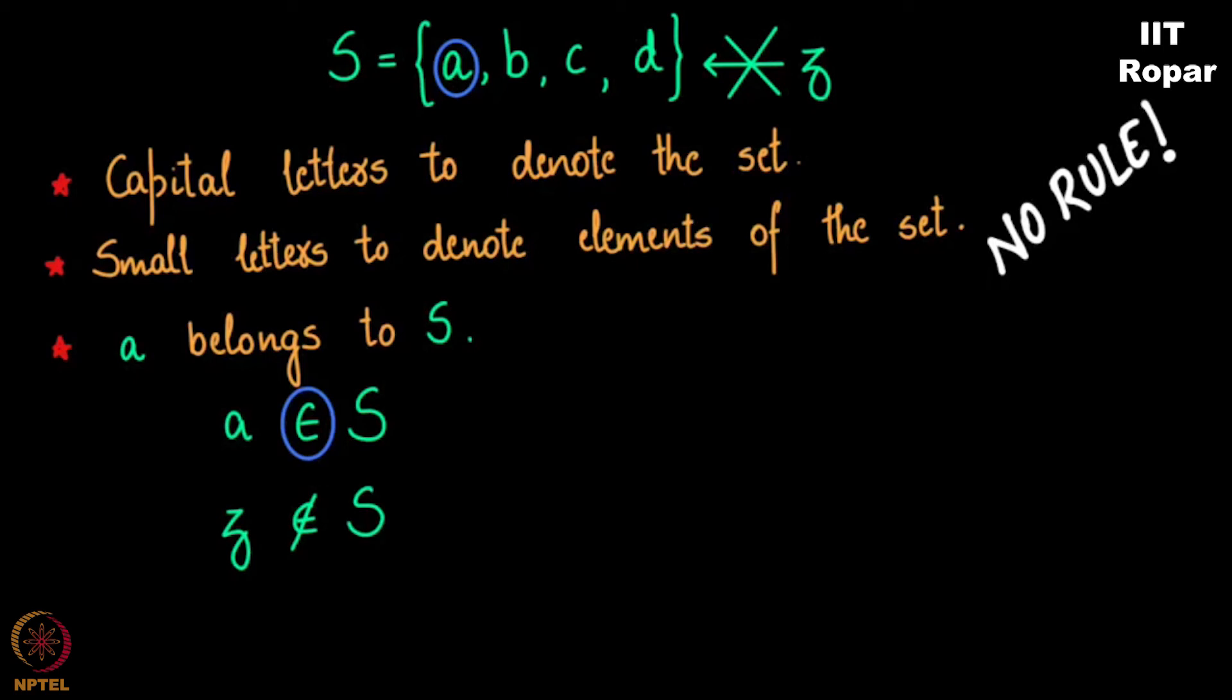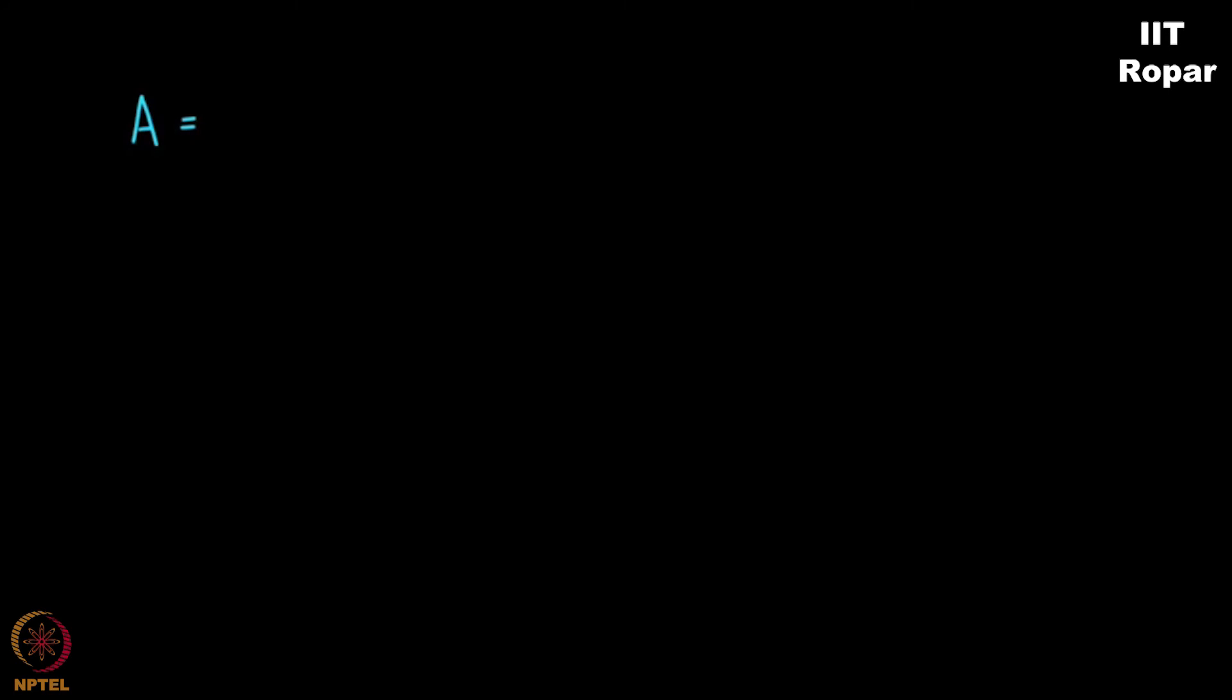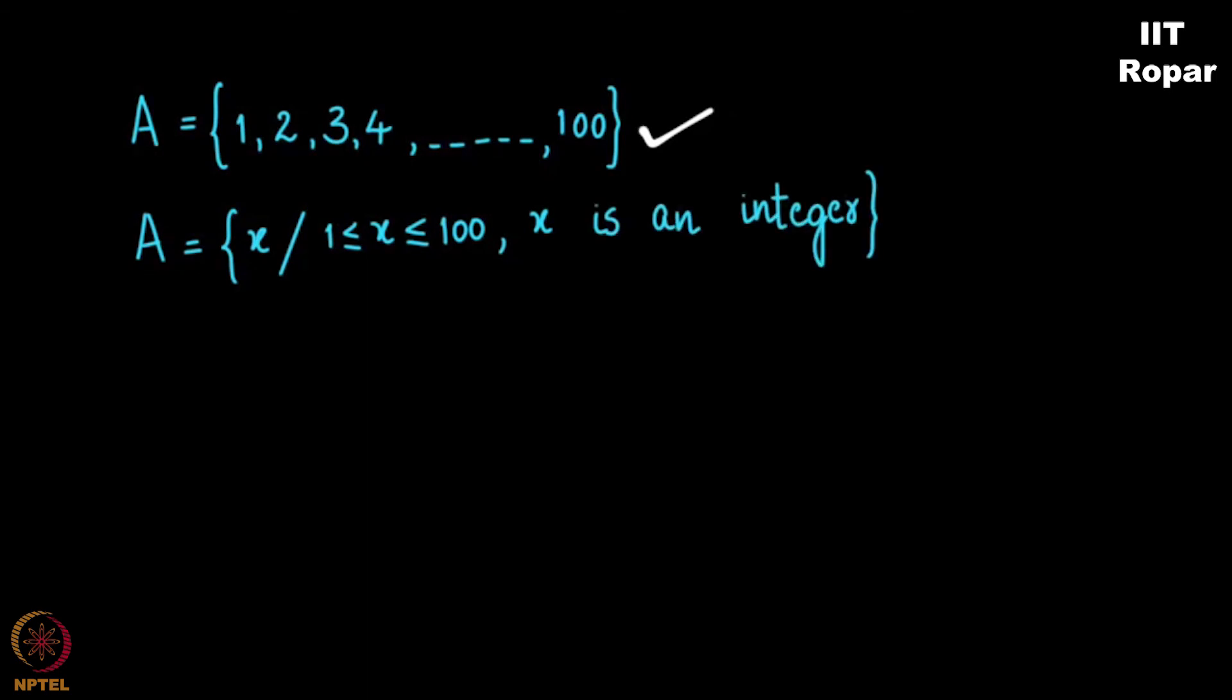Let us consider a set of all numbers. Let's say set A comprises of 1, 2, 3, 4, up to 100. There are many ways in which you can write a set. This is a standard notation that I am going to tell you right now, where I can also write this set as X such that - please note it will be very clear to you as you see more examples - such that X is between 1 to 100 and X is an integer. So this is same as this.